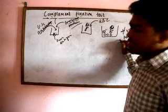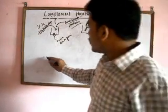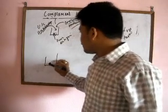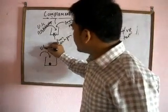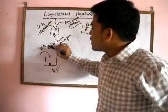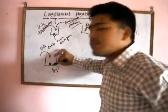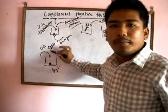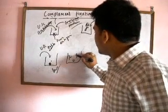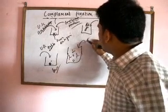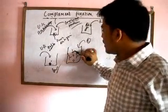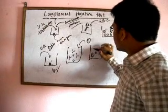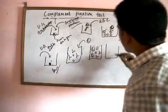Now let's look at the negative result. Suppose you add an unknown antigen and an unknown antibody, but the antibody does not have affinity for the antigen — for example, the antigen is HIV but the antibody is for hepatitis. There will be no affinity, so no antigen-antibody complex will form. When complement is added, it will not be fixed to anything and will remain free.